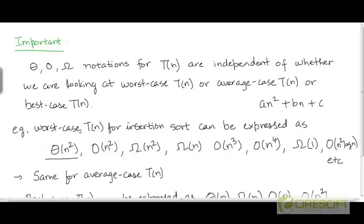We dropped the lower order terms and ignored the constant coefficient of n², and represented the worst case running time as θ(n²). Now, if the worst case running time is in θ(n²), it must also be in O(n²) and Ω(n²), because any function that is θ is also O and Ω. But we could have also represented the worst case running time as Ω(n).